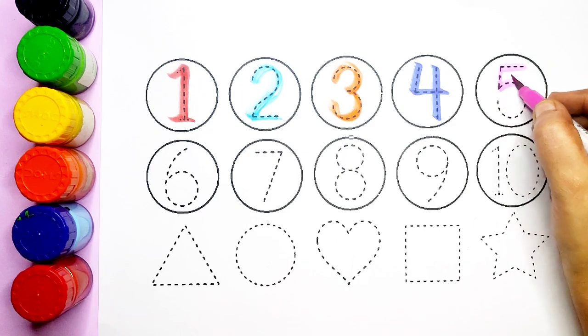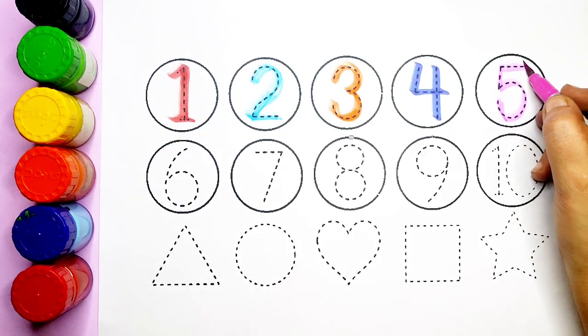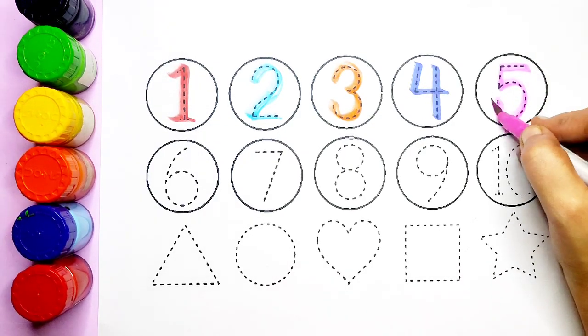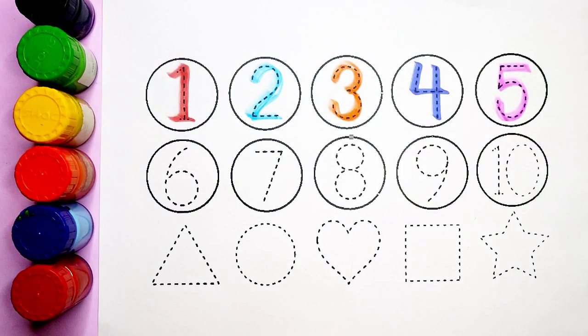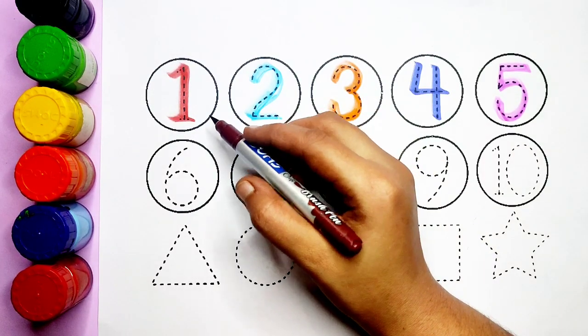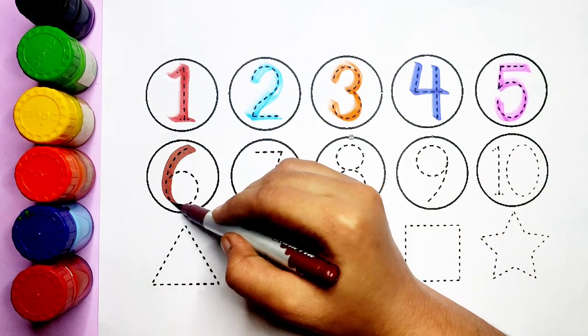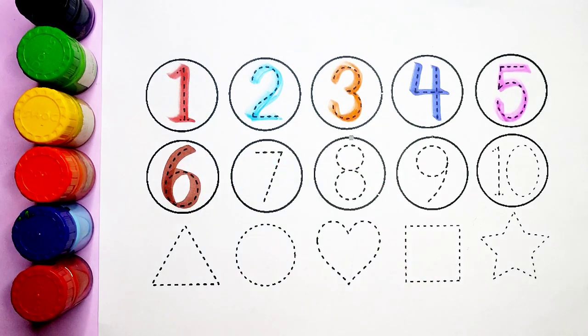After four comes five. Pink color, number five. After five comes six. What comes children? Six. Brown color, number six.